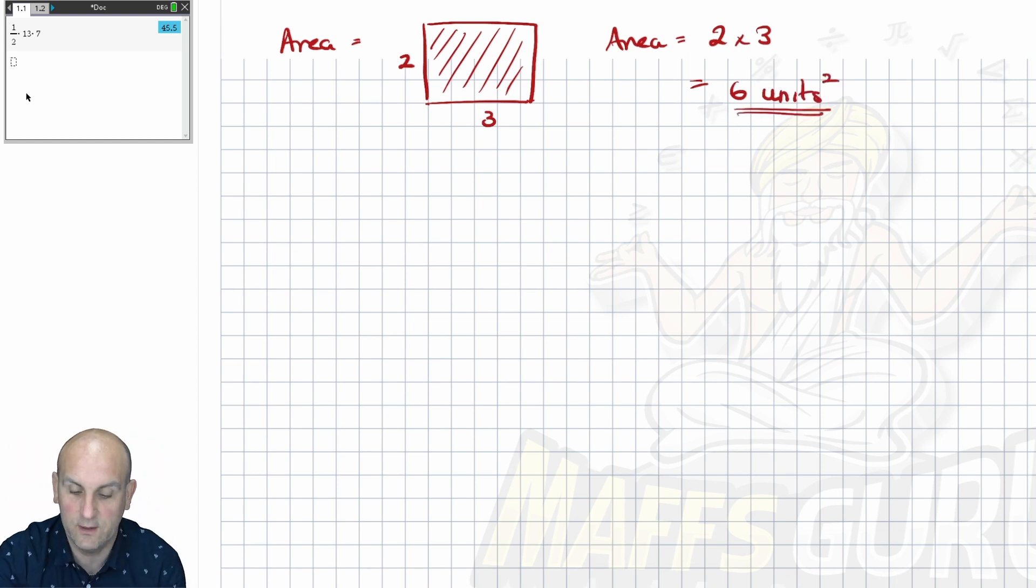So that might be two, that might be three, and in which case my area would be two times three or six. Now because we haven't got units, I would write the word units squared. So there we go. Two times three.